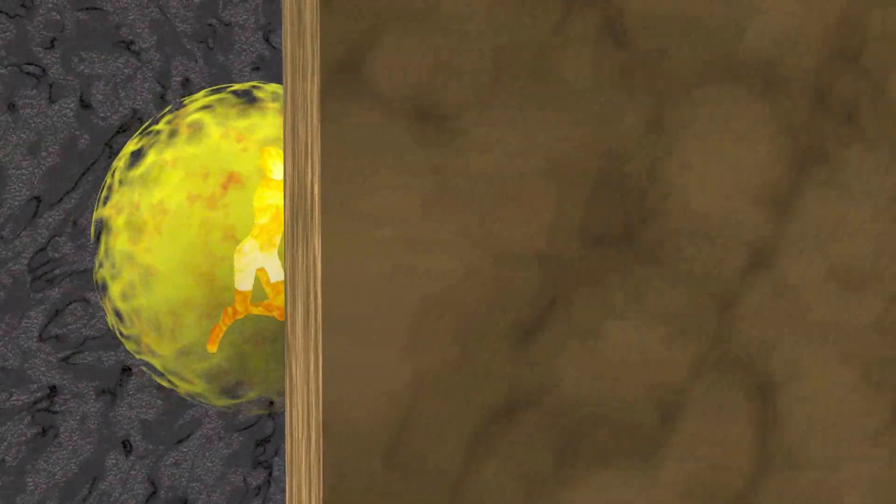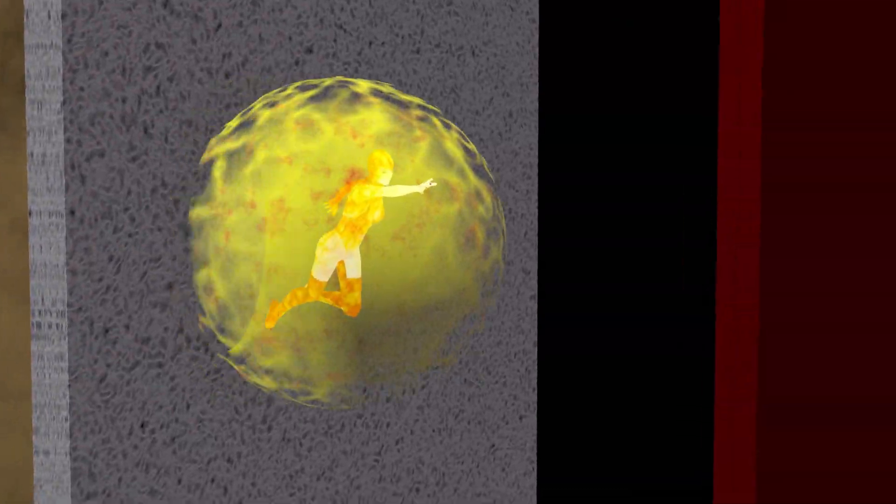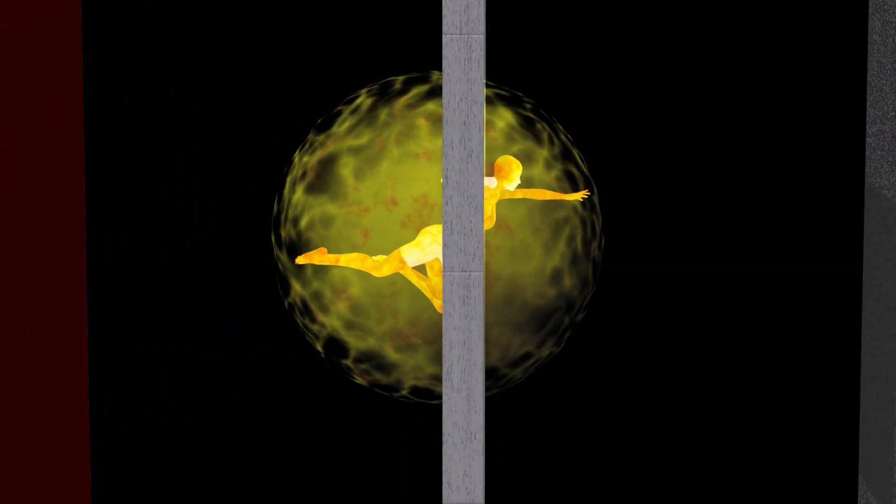A gamma ray can pass through a considerable amount of solid matter without interacting. But when it does interact, the results can be spectacular.